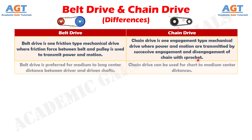Number 2: Belt drive is preferred for medium to long center distance between driver and driven shafts. Whereas, chain drive can be used for short to medium center distances.